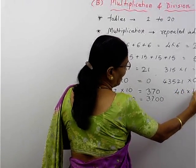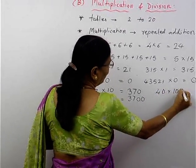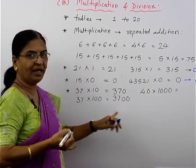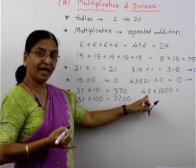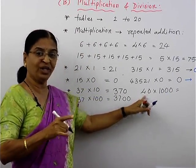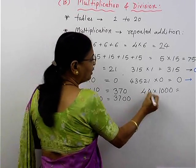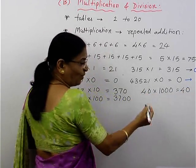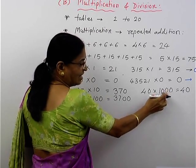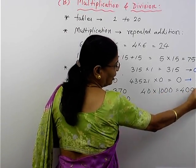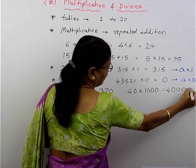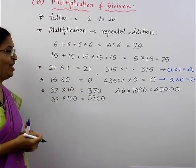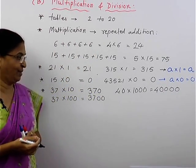For example, 40 multiplied by 1000. Here there is already one zero in 40, but don't leave that zero — write it as it is, and then add 3 more zeros. So the answer will be 40,000.